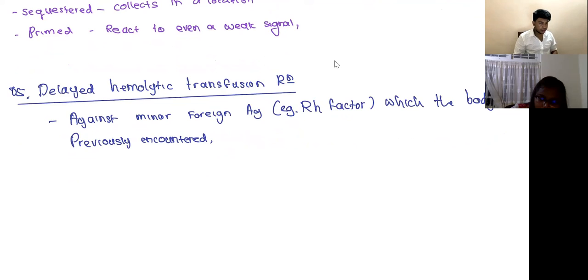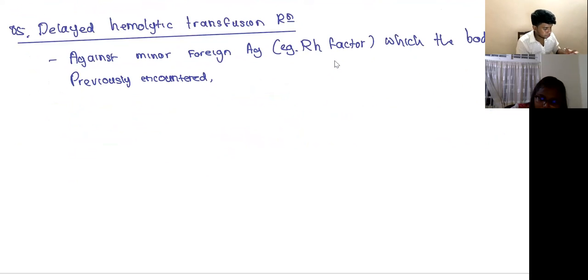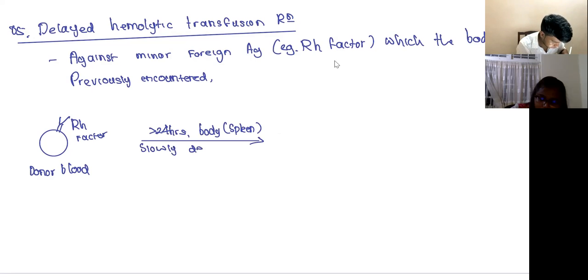So Prashant talked about hemolytic disease of newborn. Now we are talking about the adult version of this. What happens if you give an adult blood which is Rh non-compatible? So let's say in the donor blood you have the Rh factor. Always after 24 hours, the body, the spleen, slowly destroys the RBC. It slowly destroys the RBC. It's not going to destroy all of it, whatever it can it destroys.